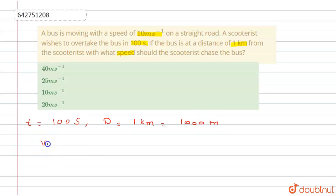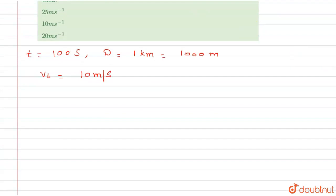Vb means the bus is moving with speed, so speed of the bus is 10 meter per second. Now we can calculate the velocity.